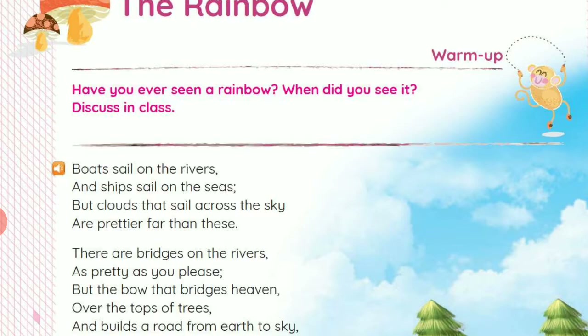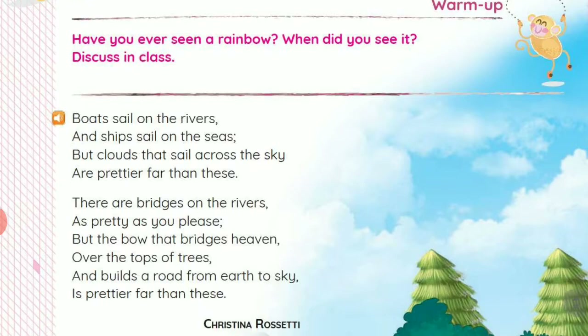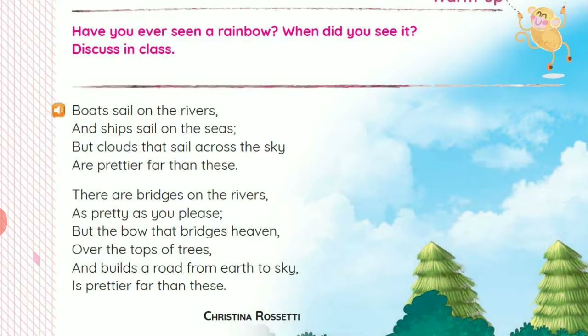So let us study the poem. First of all we will read the poem. 'Boats sail on the rivers, and ships sail on the seas, but clouds that sail across the sky are prettier far than these. There are bridges on the rivers as pretty as you please, but the bow that bridges heaven over the tops of trees and builds a road from earth to sky is prettier far than these.' This is written by Christina Rossetti. So children, you have to learn this poem.